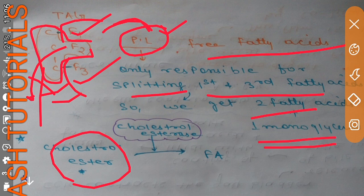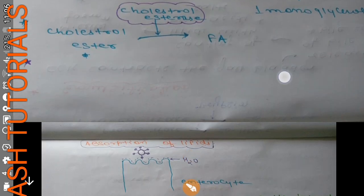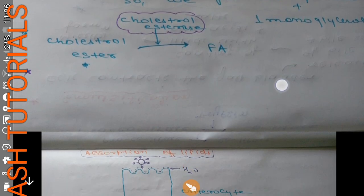Cholesterol esters are also digested by cholesterol esterase into fatty acids. Cholesterol esterase generally catalyzes the hydrolysis of cholesterol esters, esters of fat-soluble vitamins A, D, E, and K, and also some phospholipids and triglycerides. This is all about lipid digestion.